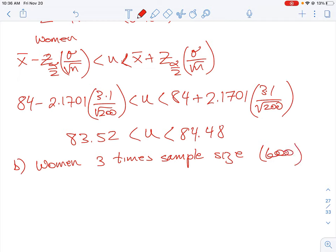All right. So the next thing we can do is we're going to do the exact same calculation, but our N value is just going to increase to 600. And then we'll see what kind of change happens in our interval. So this is going to be 84 minus 2.1701 times 3.1. But we're going to use the square root of 200 times three, which is 600. That just means there's more people being sampled.